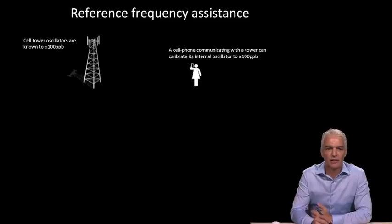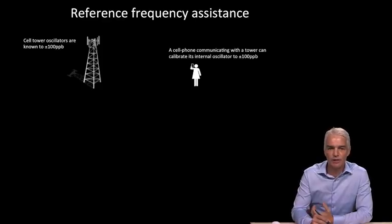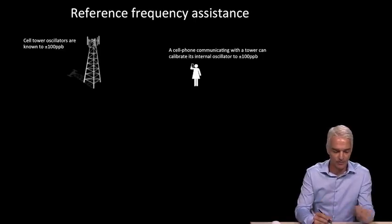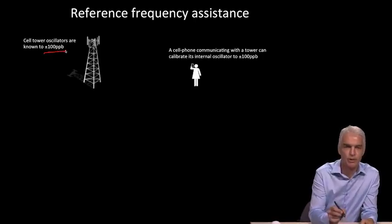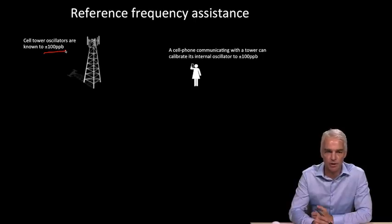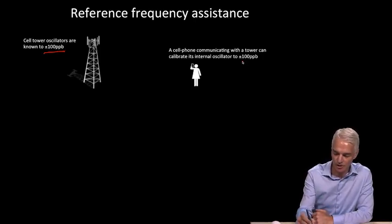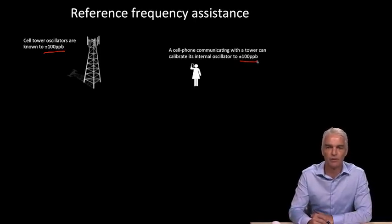We saw before that the oscillator in a receiver might have an offset of something like one part per million. However, when that receiver is part of a cell phone communicating with a cell tower, the cell phone can calibrate that oscillator to whatever accuracy the cell tower was calibrated to. Cell towers are calibrated to plus or minus 100 ppb, or parts per billion of frequency. Therefore, your GPS receiver oscillator can be and is calibrated to the same accuracy. That's where we get 100 ppb as a typical value.